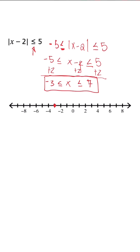So we know that both of these are going to be closed circles, and this graph is going to run towards each other. So this is what it should look like. Now when we're talking about interval notation, what numbers are included in this inequality, or what is the range? We're going to use a bracket because it's or equal to, and it's going to be negative 3 all the way to positive 7. And this is how you would solve, graph, and express interval notation for the absolute value inequality.